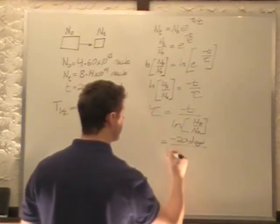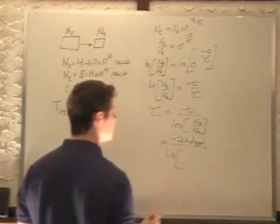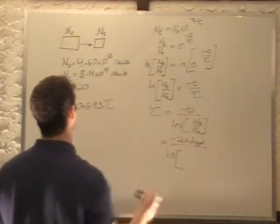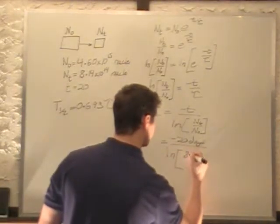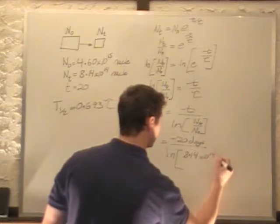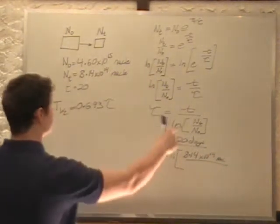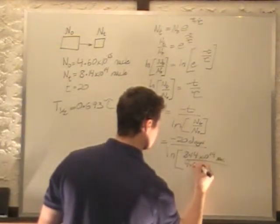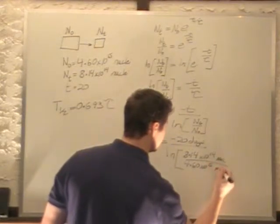We have a negative here, but we'll get a negative from this natural log because it's less than one. It's some decimal number because nt is the smaller of the two that we're dividing into: 8.14 times 10 to the 14 nuclei divided by n0, 4.60 times 10 to the 15 nuclei.